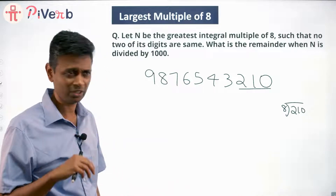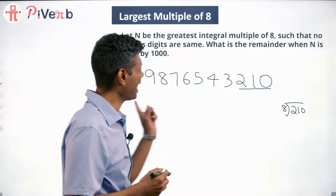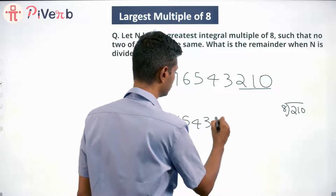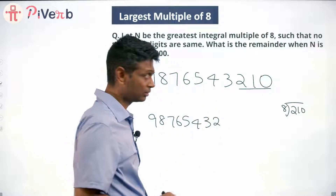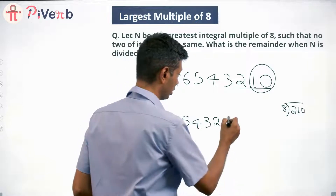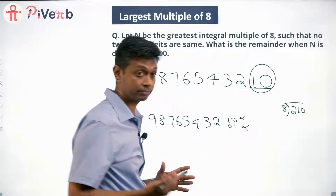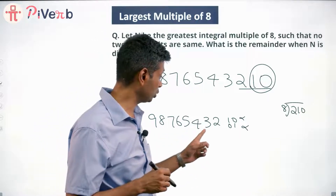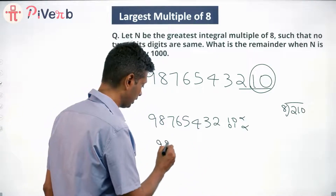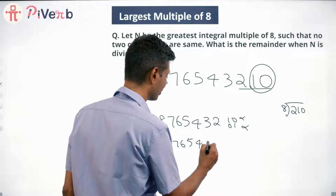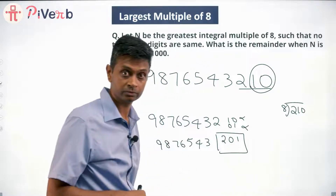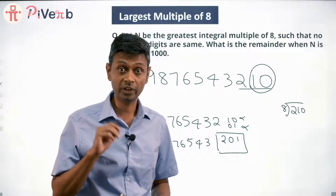How do you go about it? We want this number to be as large as possible. So we say: 9, 8, 7, 6, 5, 4, 3 — till here we maintain. Then we try to see if we can change the remaining digits in some form to get a multiple of 8. The remaining digits are 2, 0, and 1. If we can arrange these in some combination to get a multiple of 8, then we are through.